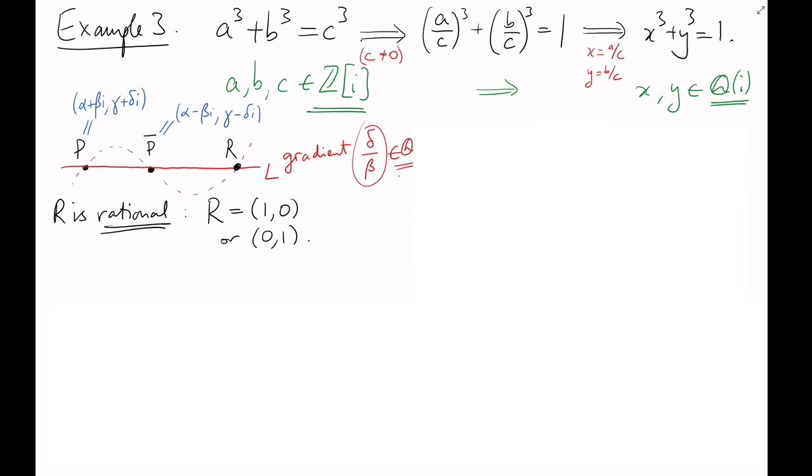In other words, every Gaussian rational point, p, on this curve, lies on a line of rational slope through one of the two rational points. And since everything is symmetric in x and y, let's just pick the same point as before, 1,0, and the line of gradient m through that. That is, L has equation y equals m times (x-1), just like it did before.